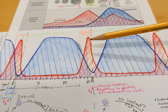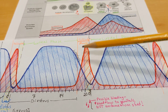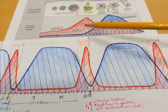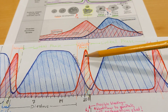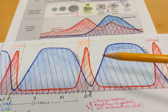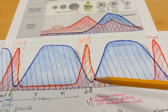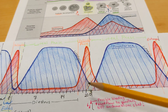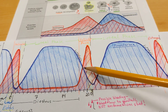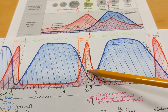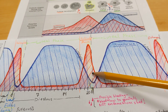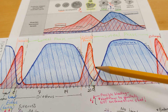The follicular phase is the phase leading up to ovulation in both menstruation as well as in the estrus cycle. In estrus animals this phase is broken into proestrus — when the follicle is developing — and estrus, when the animal is receptive to reproduction.